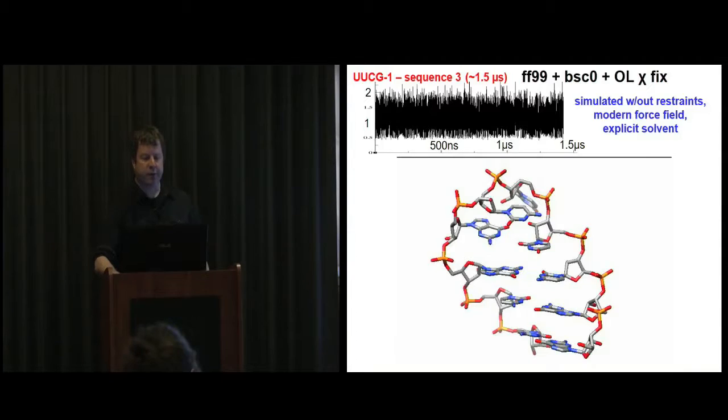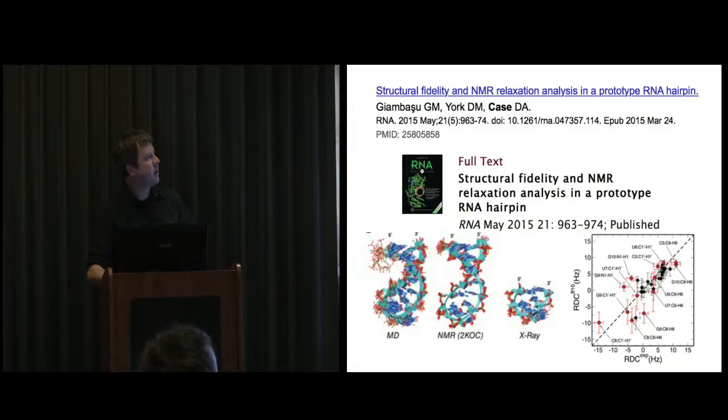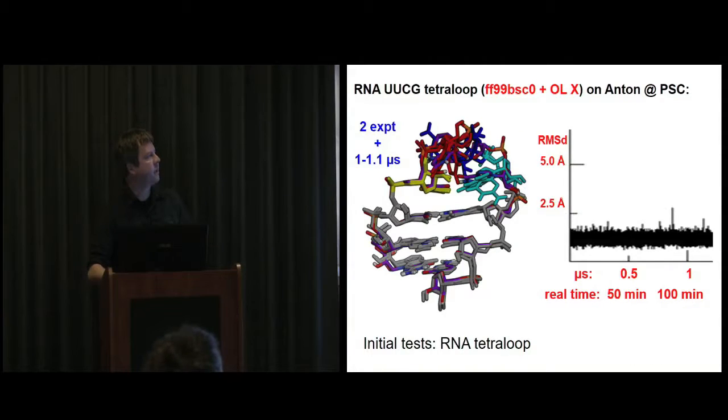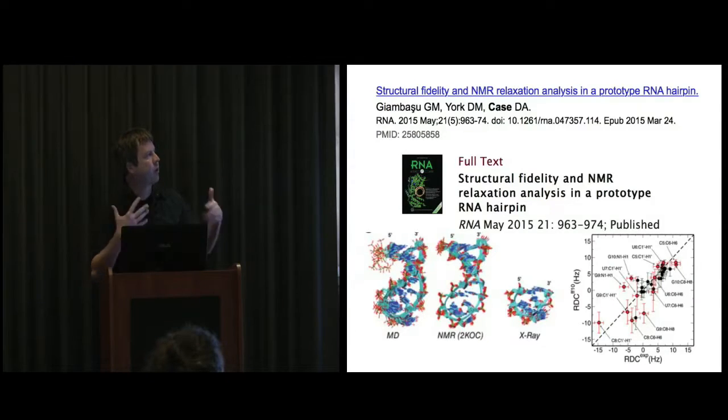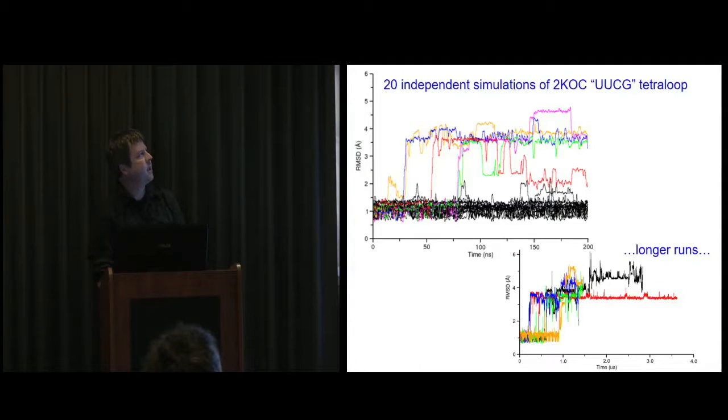We've shown these results before that for a tetraloop, which is a very stable RNA motif, we could run a simulation on Anton and it was stable. When we ran longer simulations, and what's nice is that if you take the data when you're near the experimental structure, you well reproduce the NMR observables. But when we run longer simulations, invariably these would fall apart, which was kind of annoying. Even if we run independent simulations, you can see that gradually you start deviating and never coming back. That was a problem with the force field.